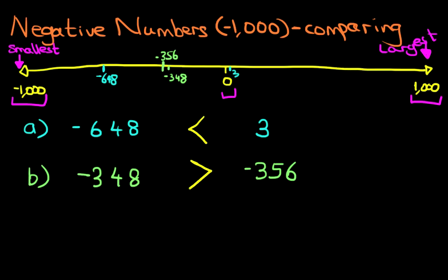Effectively, when you're comparing numbers and you've got a minus for both of them, the larger the number it is on its own, the smaller it is when you include the minus. That sounds a little bit confusing, but have a look at the number line and see how we work this out.